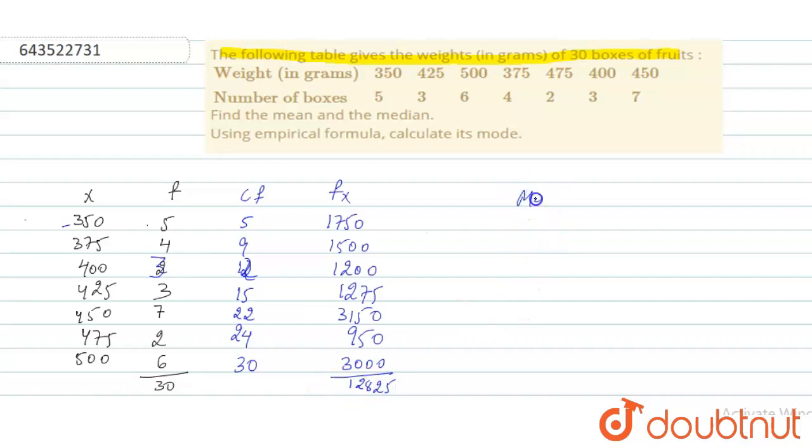Now we will find the mean. Mean equals to sigma xf by n. The formula for mean is n by 2, that equals to 30 by 2, that equals to 15. So the frequency 15, where it is here, so the mean will be 425.